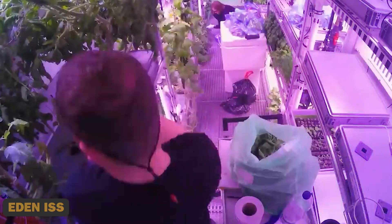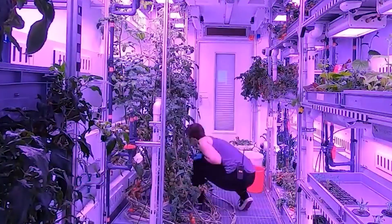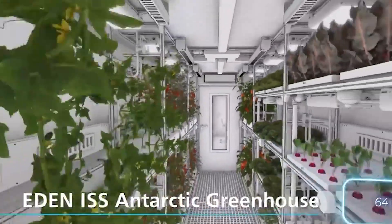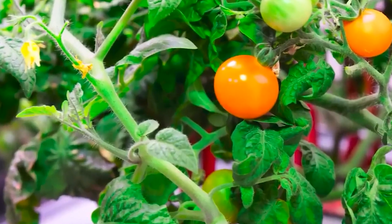Number 6: Eden ISS. In a tiny space of just 13 square meters, they grew a whopping 29 kilograms of tomatoes, 51 kilograms of cucumbers, and a variety of other greens, cabbages, and radishes.